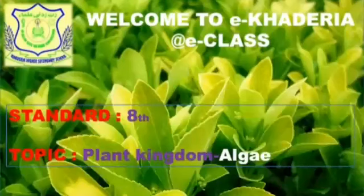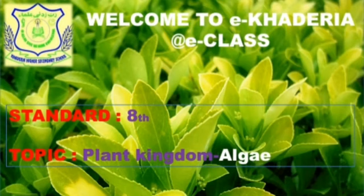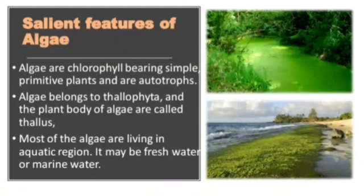Welcome everyone to the e-classroom. In this session we are going to see the topic: Plant Kingdom - Algae. Algae are chlorophyll-bearing, simple, primitive plants and autotrophs. Primitive refers to their simple way of life, and autotrophs means these organisms can make their own food. Algae belong to the Thallophyta kingdom, and the plant body of algae is called thallus.